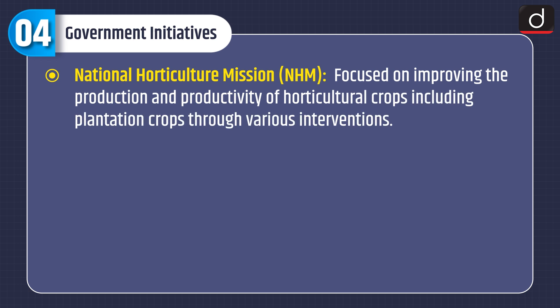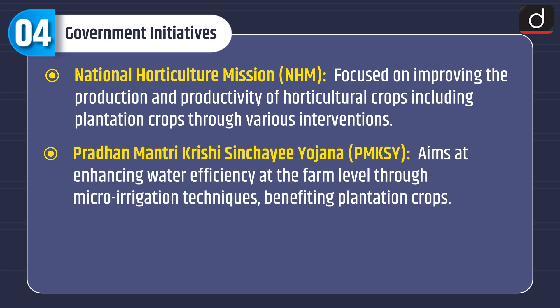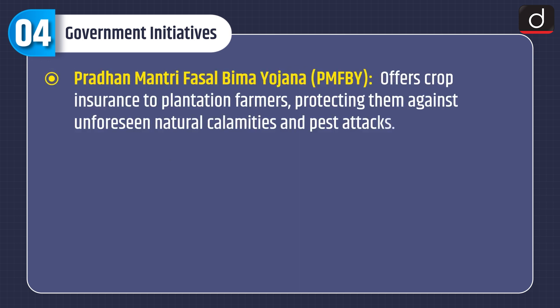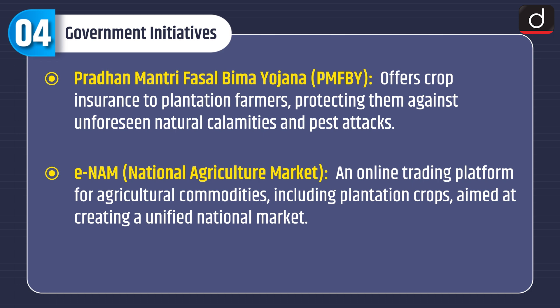Government Initiatives: National Horticulture Mission — focused on improving production and productivity of horticultural crops, including plantation crops, through various interventions. Pradhan Mantri Krishi Sinchai Yojana — aims at enhancing water efficiency at the farm level through micro-irrigation techniques, benefiting plantation crops. Soil Health Card Scheme — provides farmers, including plantation cultivators, with soil health cards that give insights into soil health and guide them on appropriate nutrient management. Crop insurance scheme offers protection to plantation farmers against unforeseen natural calamities and pest attacks. E-NAM (National Agriculture Market) — an online trading platform for agriculture commodities, including plantation crops, aimed at creating a unified national market.